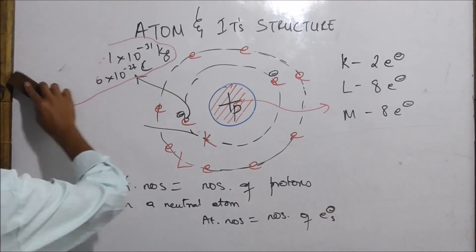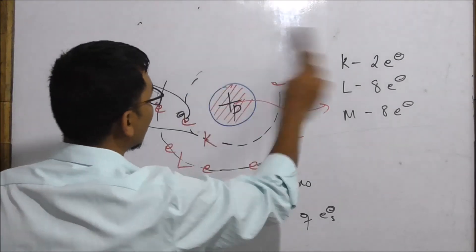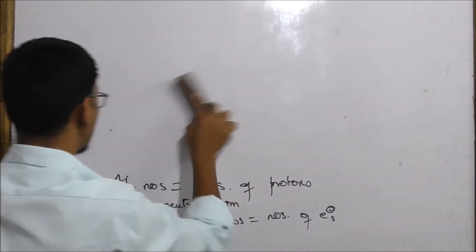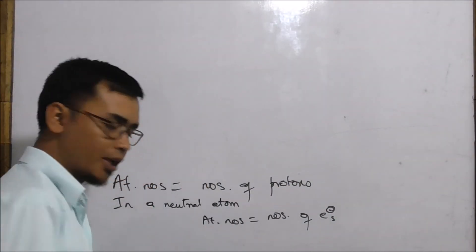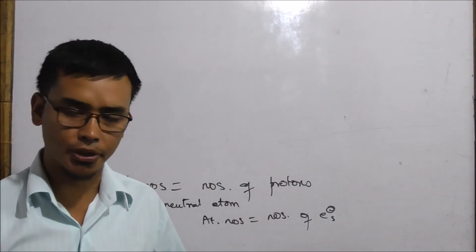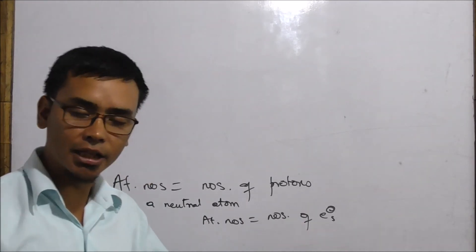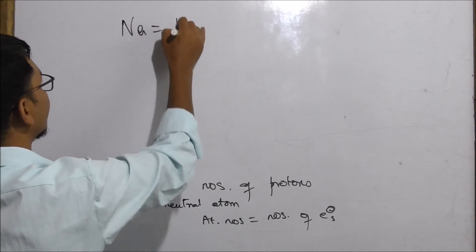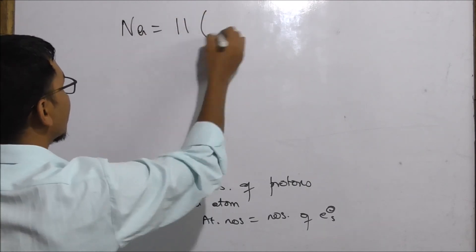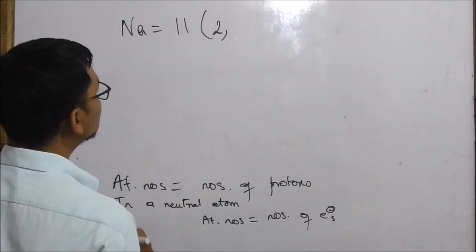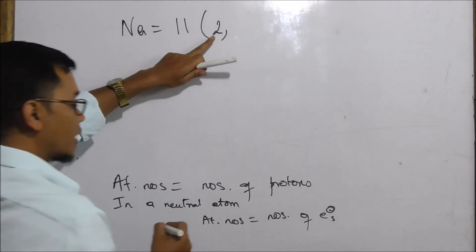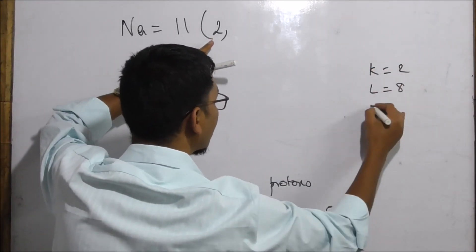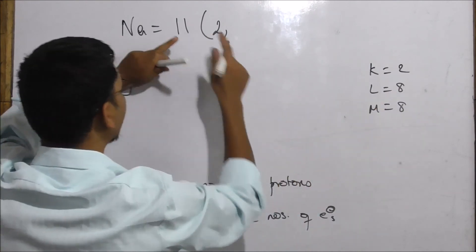In a neutral element — sodium, potassium, lithium, beryllium, boron — we can see these in the periodic table. Sodium has atomic number 11, with an electronic configuration of 2, 8, 1 — meaning 2 in the K-shell, 8 in the L-shell, and 1 in the M-shell.